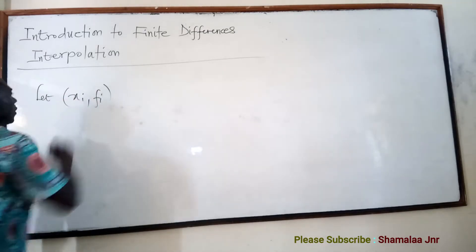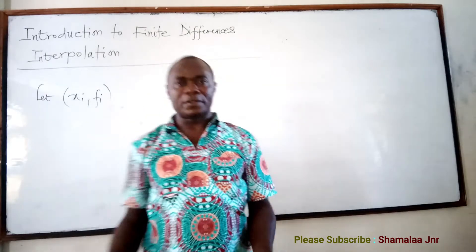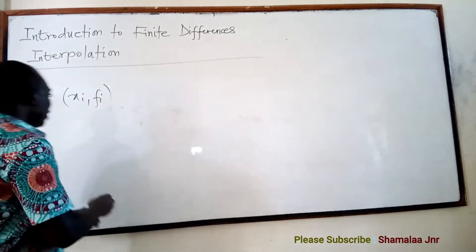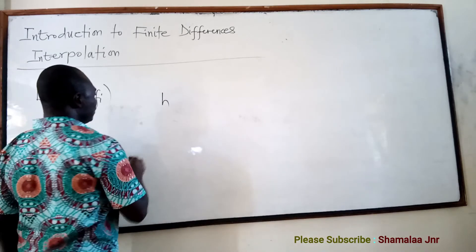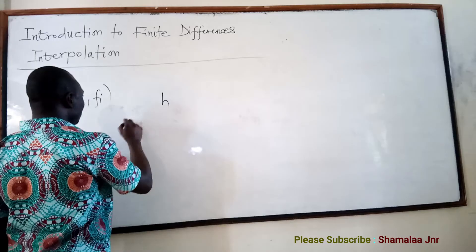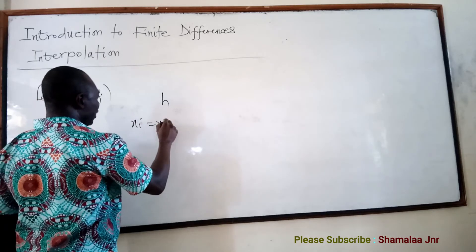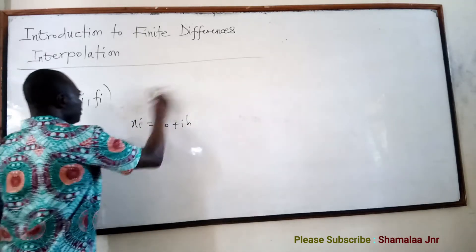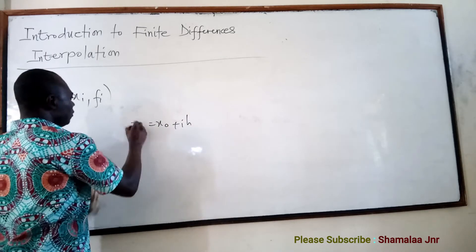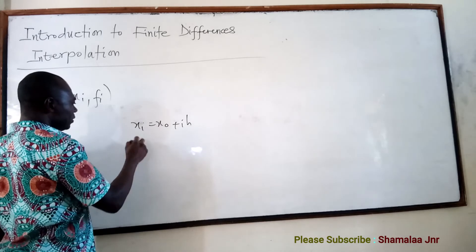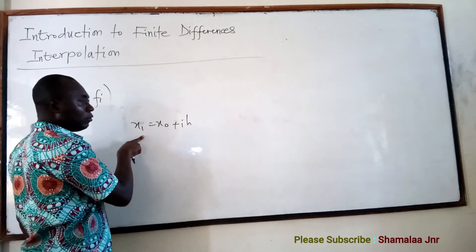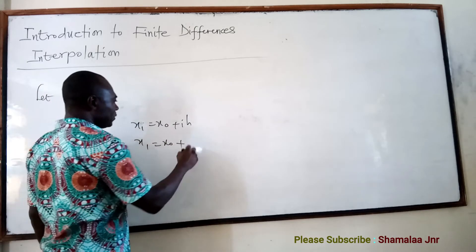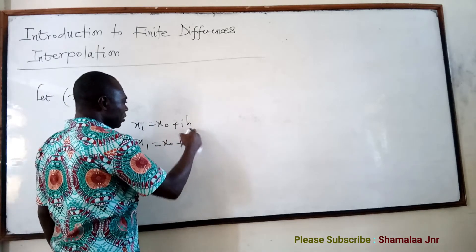Let Xi, Fi be a set of data points interpolated at equal interval H, meaning that Xi is equal to X0 plus i times H. So if i is equal to 1, we get X1 is equal to X0 plus H.